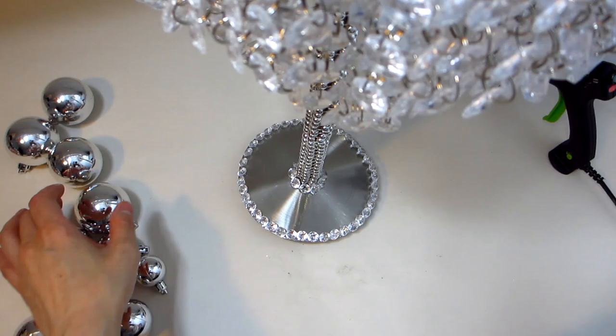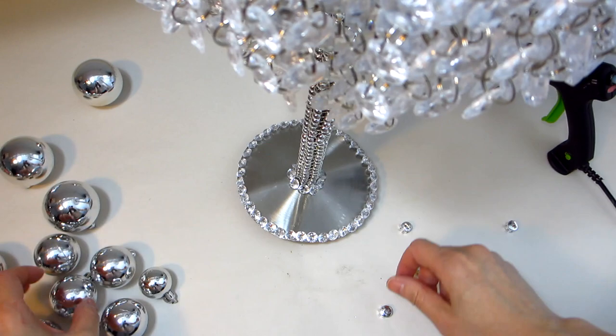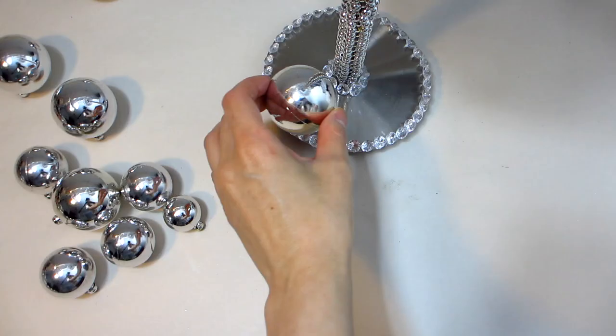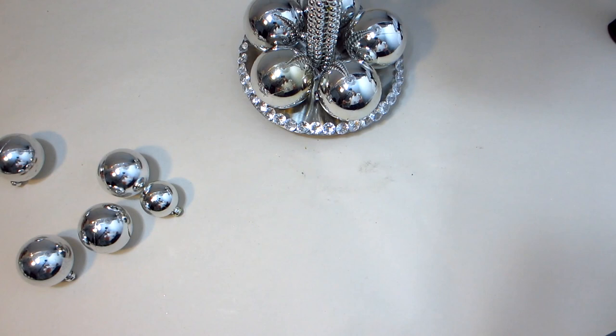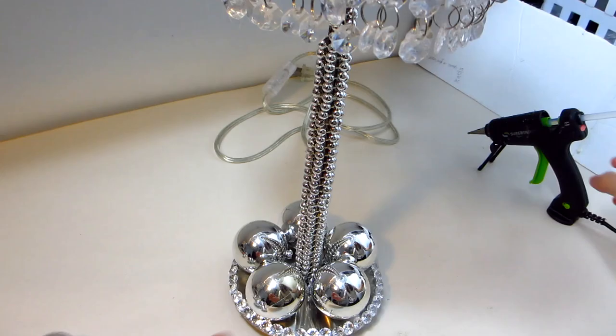For our second style we will be using three different sizes of ornament balls. The largest sized ones will be placed along the base. Here you can see I have placed a total of five. Once you're happy with the placement, use some hot glue to secure each one to the base.